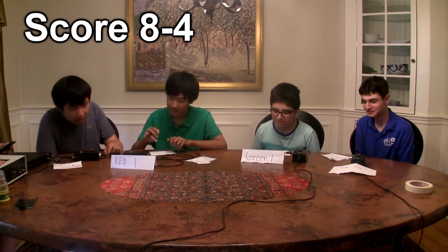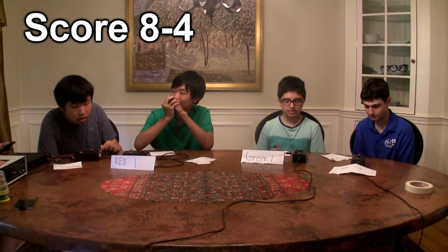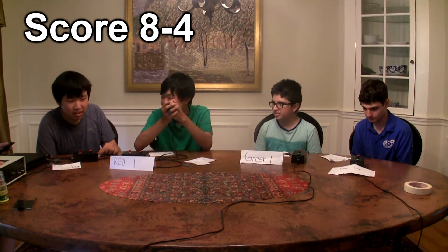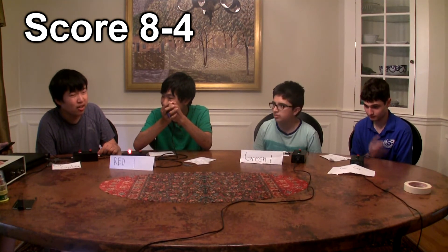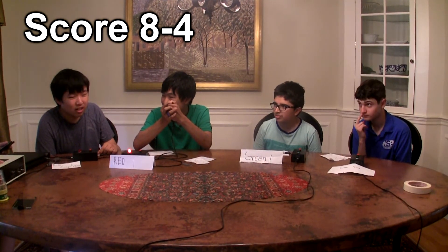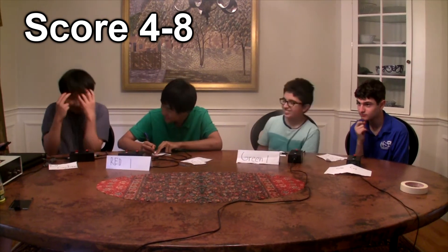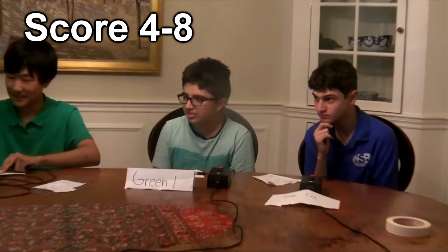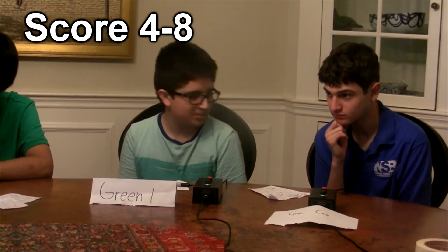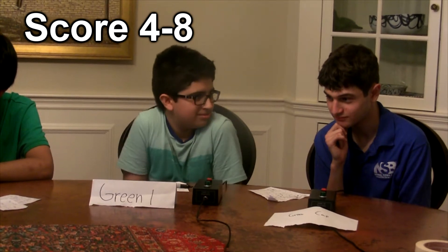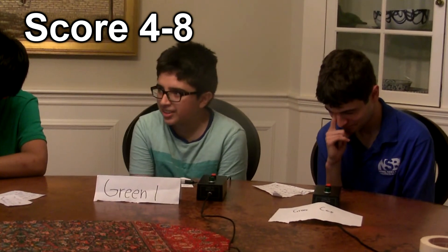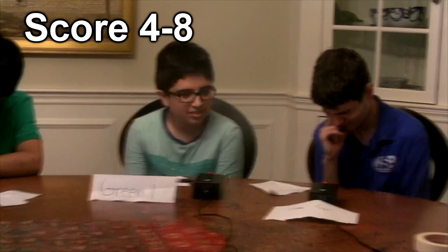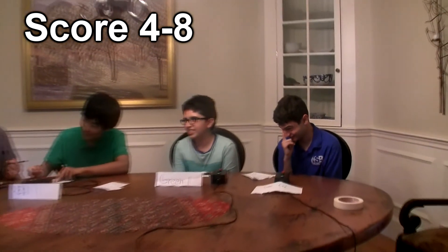Toss up. Biology. Multiple choice: The solenoid is also another name for what level of chromatin organization? Red one buzzes in with X — incorrect. Re-read for green team: W: 30 nanometer fiber. X: Nucleosome. Y: 300 nanometer fiber. Z: Metaphase chromosome. Green captain answers Z — incorrect. Correct answer is W, the 30 nanometer fiber.